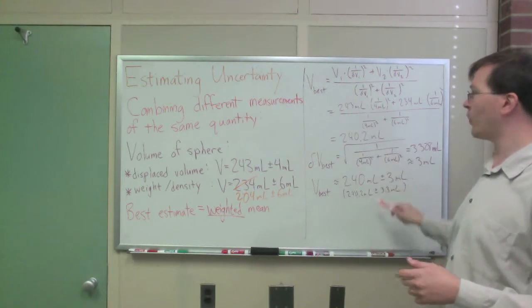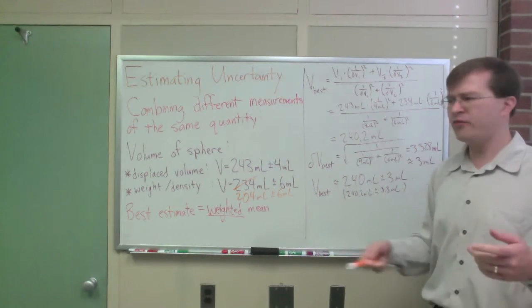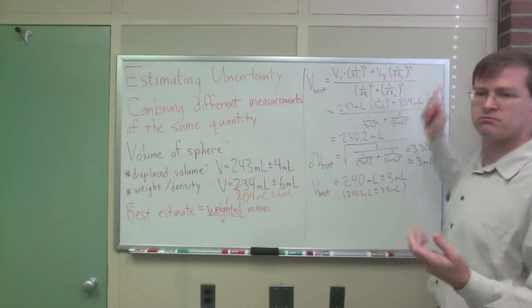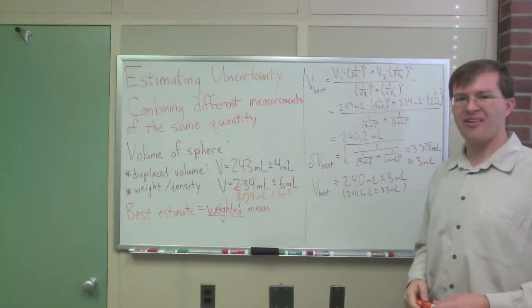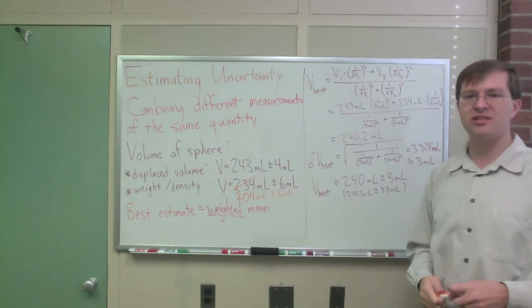So once you have two plausibly consistent values, you just do a weighted average to find the best estimate. Oh, and if you had three of them, you just add another curve. Simple enough. All right, that's the next step in estimating uncertainties.